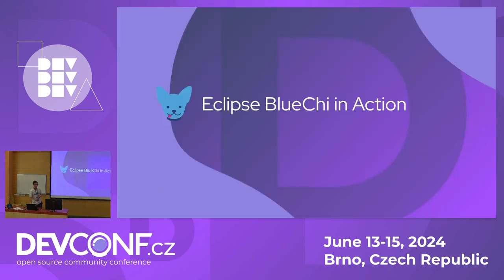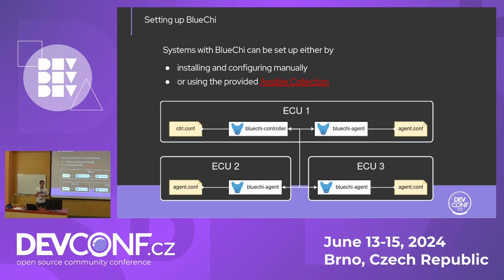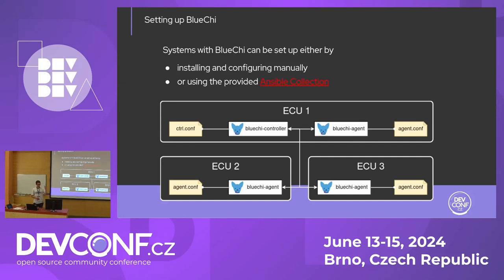Let's dive into the features of BlueG, but before we can do that we need to set it up. The controller and the agent read configuration files, where for example the agent gets information about the IP address and port of the controller and the name it uses to register at the controller. The BlueG controller in turn gets configured with a list of node names that it allows to connect. If an agent tries to connect whose name isn't in that list, it gets rejected. We can install and configure this manually or use the provided Ansible collection to automate this.